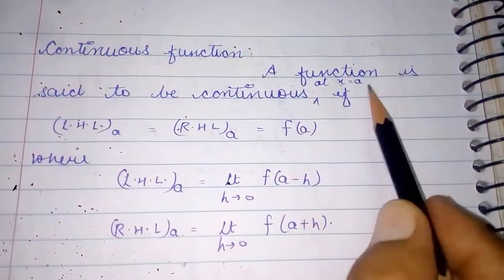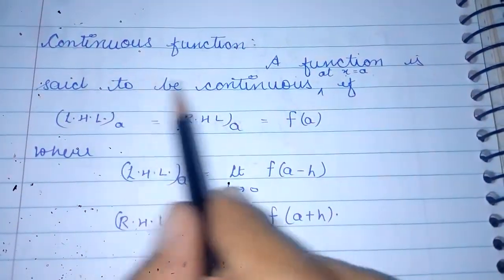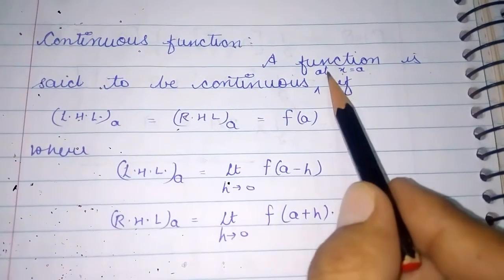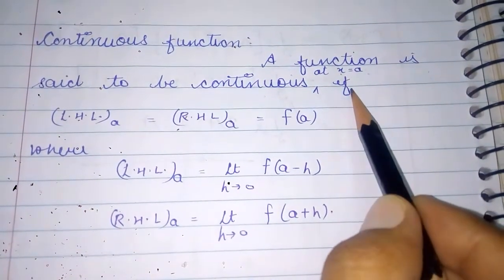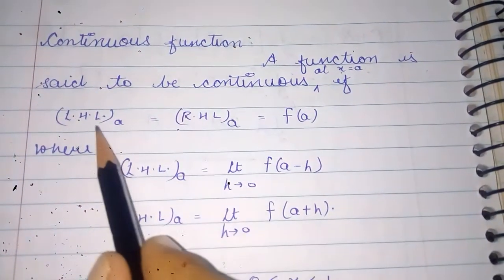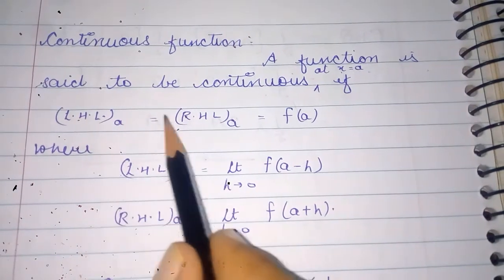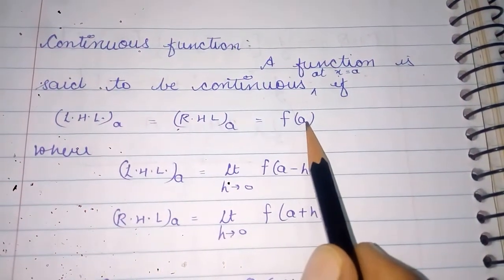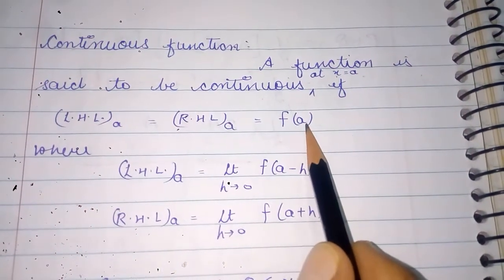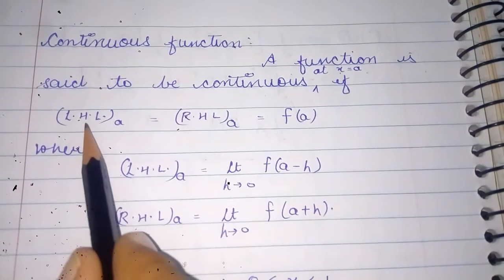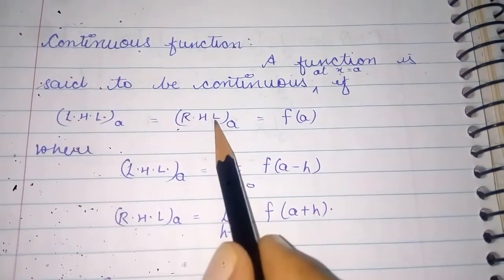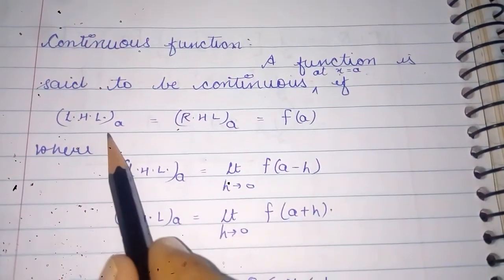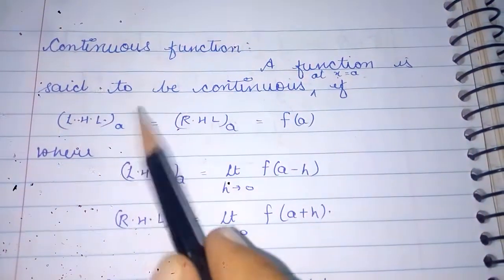A function is said to be continuous at any point — suppose at x equals to a — if its left-hand limit is equal to right-hand limit is equal to the function value. If left-hand limit, right-hand limit, and function value are all equal, that type of function will be a continuous function.